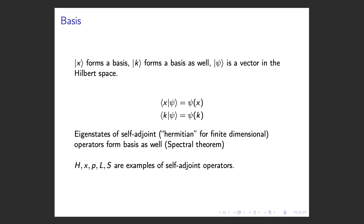Are these the only bases available? No — it turns out that eigenstates of self-adjoint operators form bases as well, owing to the Spectral Theorem from linear algebra. Examples of self-adjoint operators include the Hamiltonian operator, the spin operator, and the angular momentum operator. For example, in the angular momentum operator you might see the spherical harmonics, which is an example of such a basis.